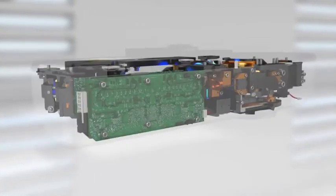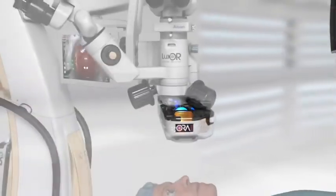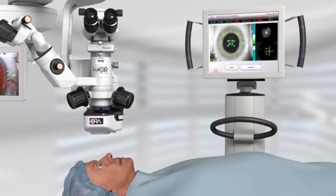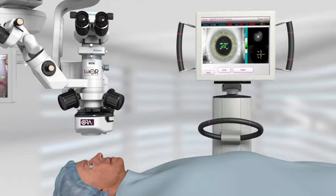By providing real-time refractive information in the OR, the Aura system with Verify Plus technology helps identify posterior corneal astigmatism and provides additional information that may not have been detected during pre-op analysis.